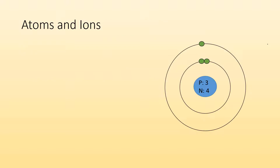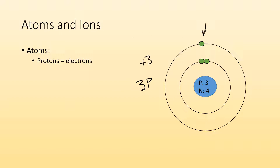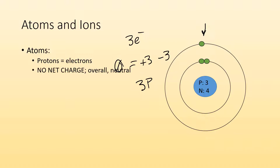Let's talk about atoms and ions. An atom is neutral — specifically it's neutral. You wouldn't really say you have a charged atom because that's not what an atom is. Atoms are neutral because protons equal electrons. Here I have three protons giving a charge of plus three, and three electrons giving a charge of minus three. When combined, the overall charge is zero — no net charge, overall it's neutral.